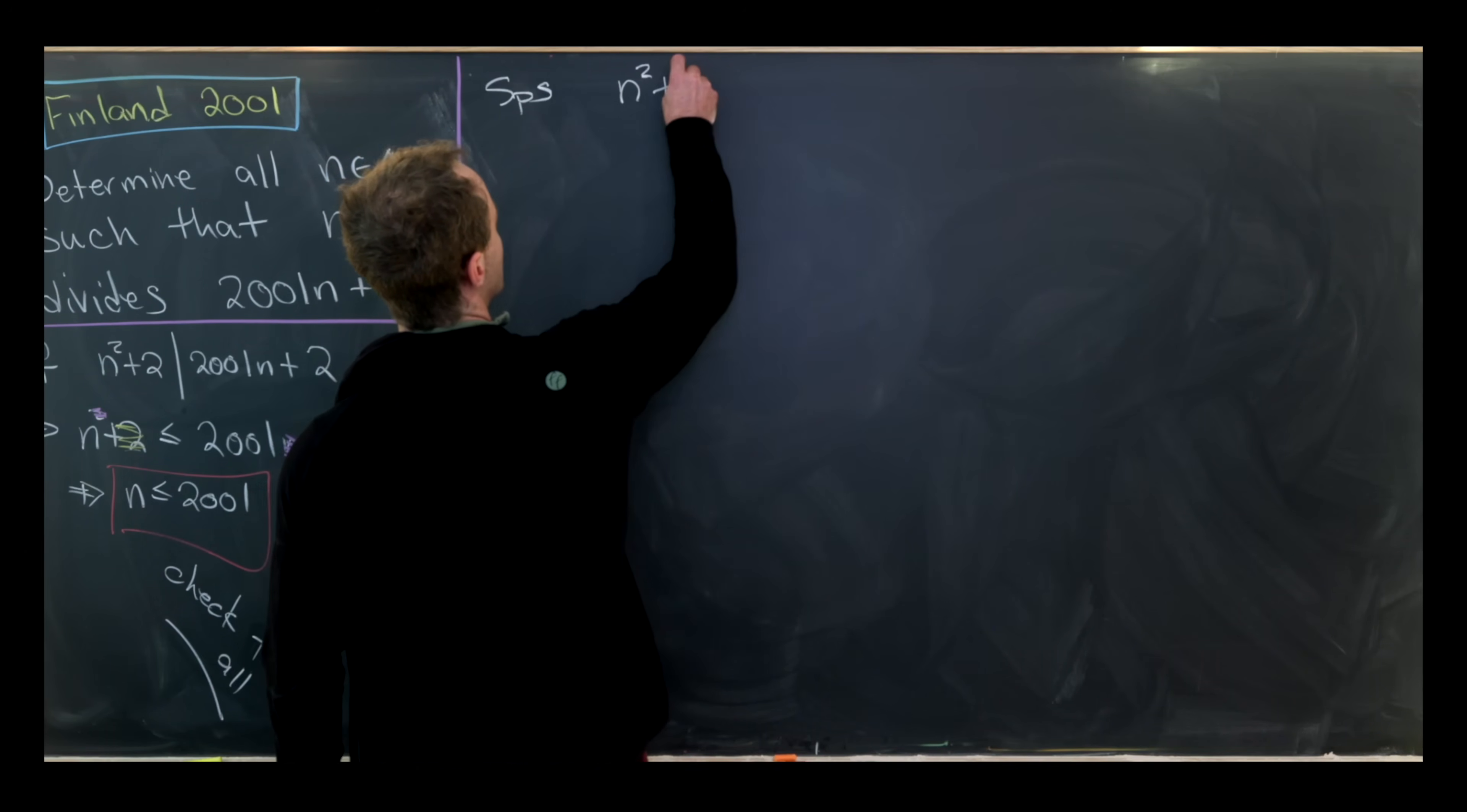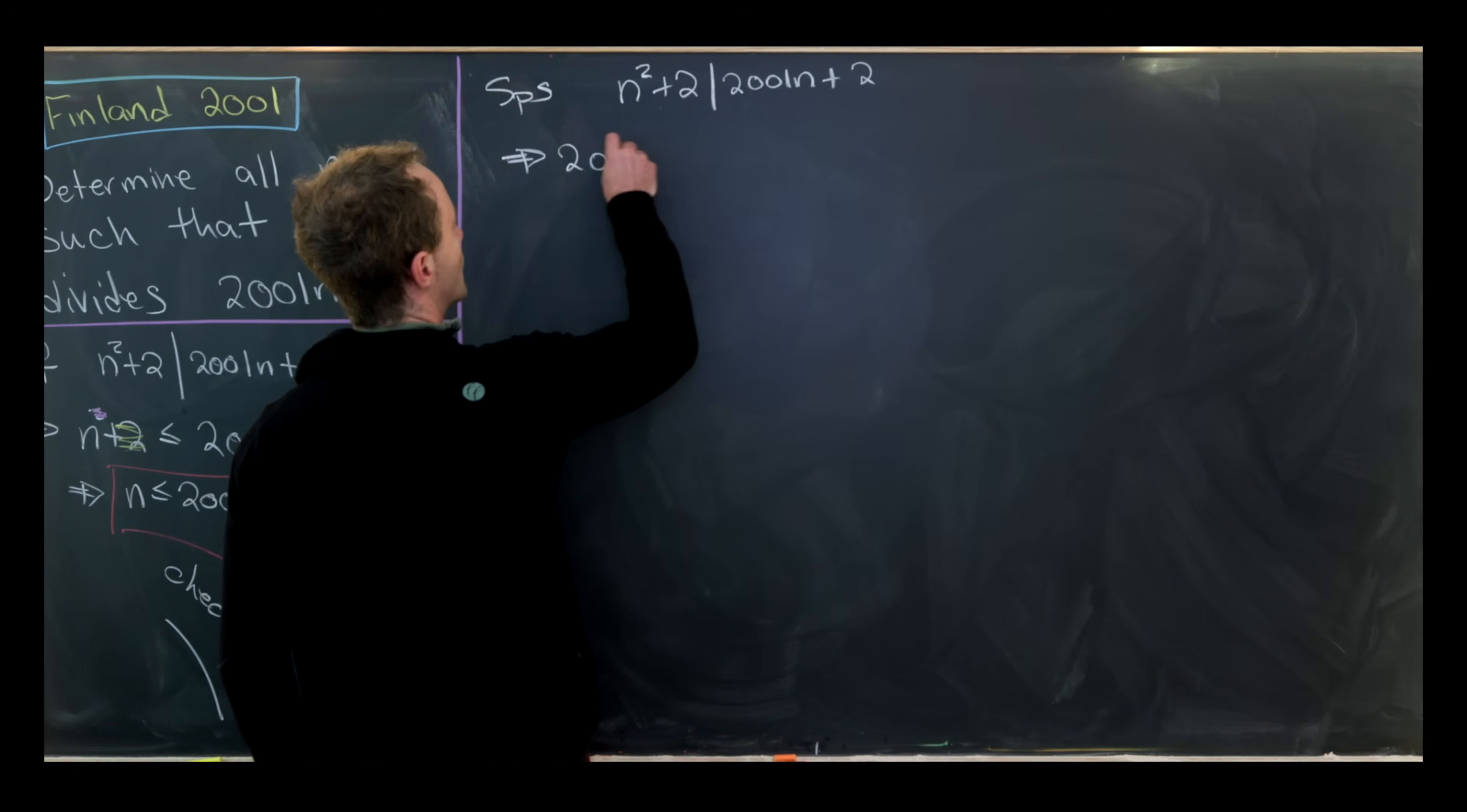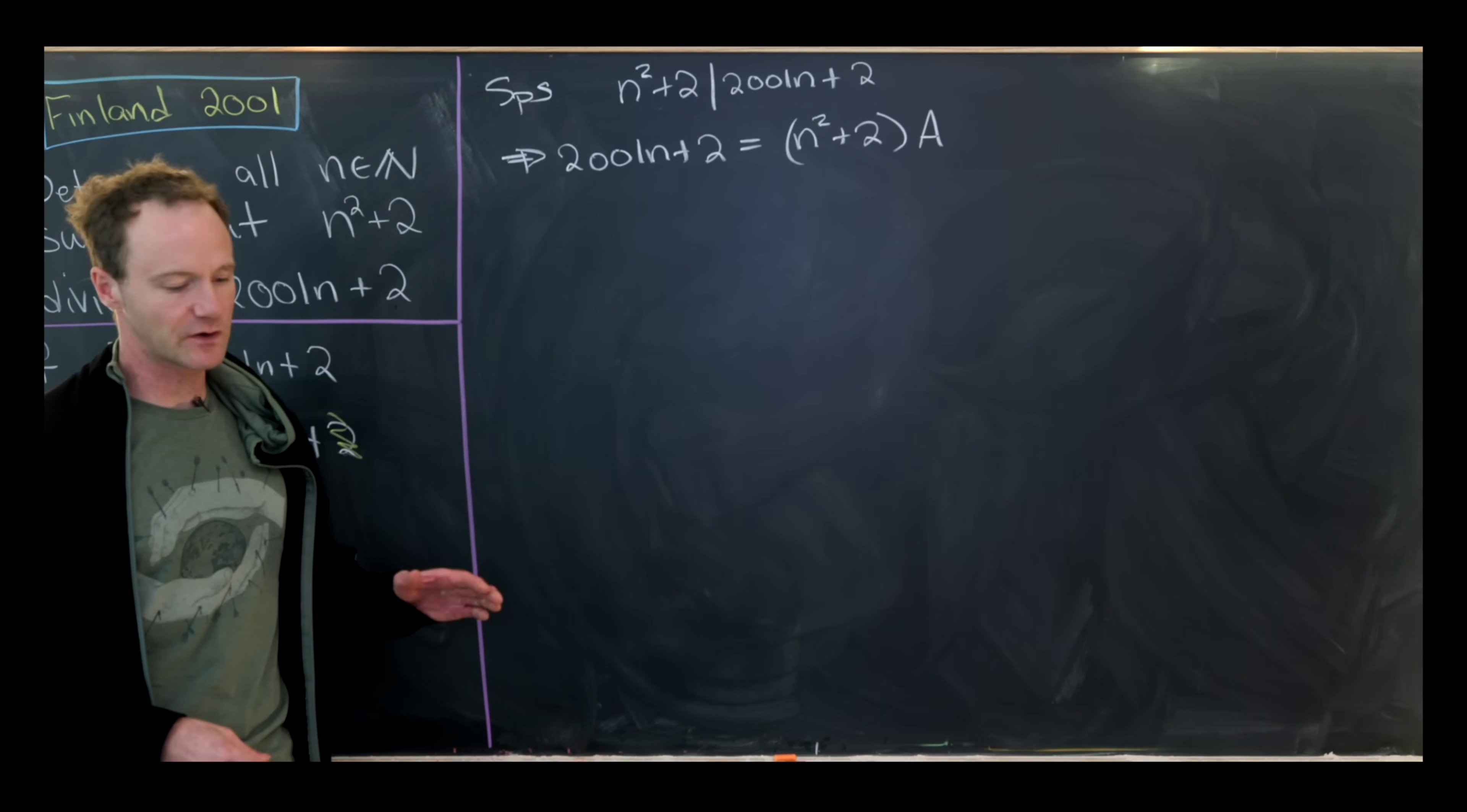Let's suppose that n² + 2 divides 2001n + 2. What does that mean? That means that we have 2001 times n + 2 equals n² + 2 times some number which I will call capital A.